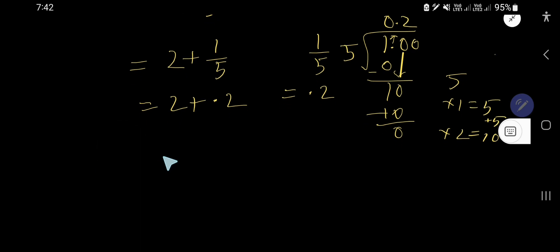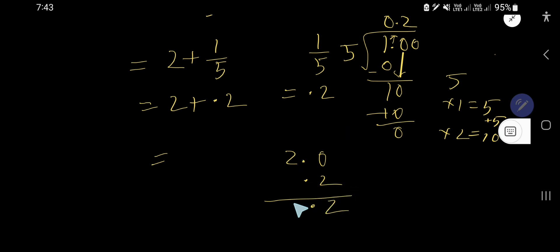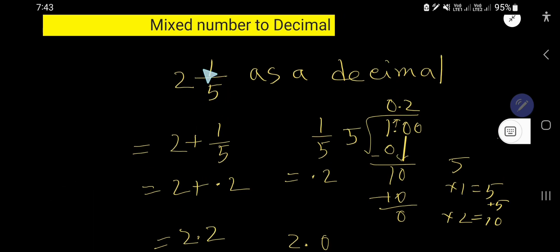Now add the whole number part. Two is a whole number — you can make it a decimal by placing a point after it. Line up the decimals and add: 2 + 0.2 = 2.2. So two and one fifth equals two point two.